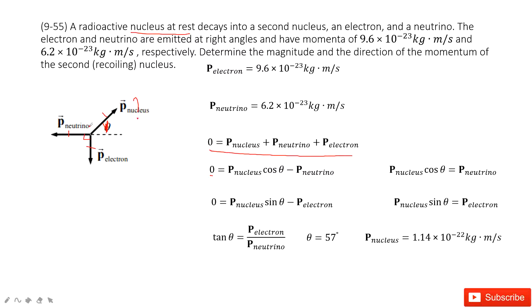And then at the y-component, momentum is still conserved. Initially it's zero. Finally, we project the nucleus momentum to sine theta in the vertical component. So this is sine theta minus the momentum for the electron.